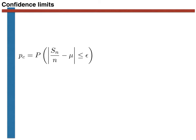The confidence limit, Pc, is the probability that if we now do a second, completely independent set of n experiments, we obtain an Sn over n value that is within a small number epsilon of the estimate that we obtained from our first set of experiments. We write this as a probability that our estimate of the expectation, Sn over n, is within epsilon of the true expectation, which we could have calculated if we had access to the probability mass or density function for the random variable.